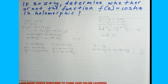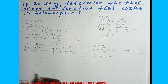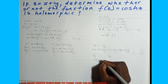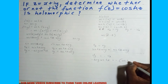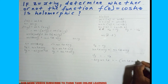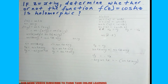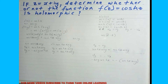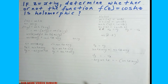Now for the second equation, u_y should equal negative v_x. We have u_y = -cosh(x)sin(y) and negative v_x = -cosh(x)sin(y). These are equal, so both Cauchy-Riemann equations are satisfied. Therefore cosh(z) is holomorphic. If these equations were not equal, the function would not be holomorphic. Thanks for watching, and don't forget to subscribe.